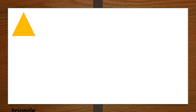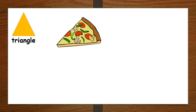What is this shape? It's a triangle. Triangle. Let's say it together: Triangle. What thing is a triangle? Let us think. Yes — a pizza. The pizza is a triangle.